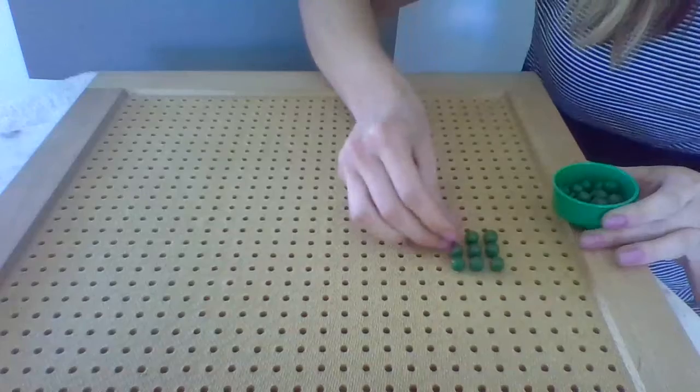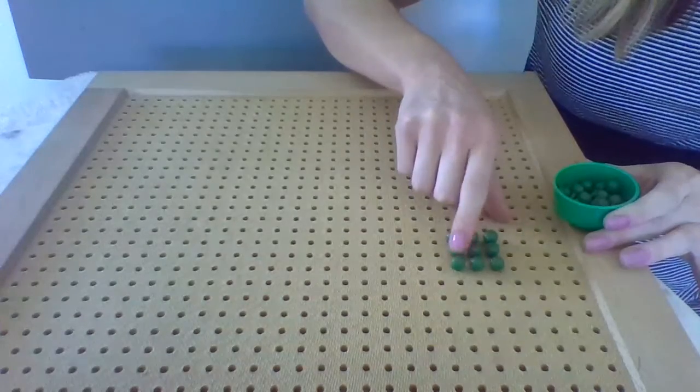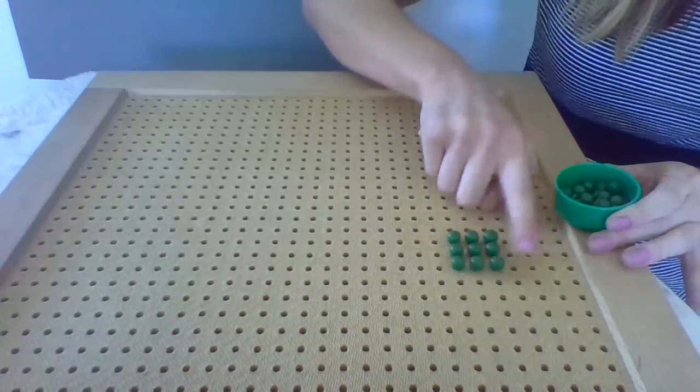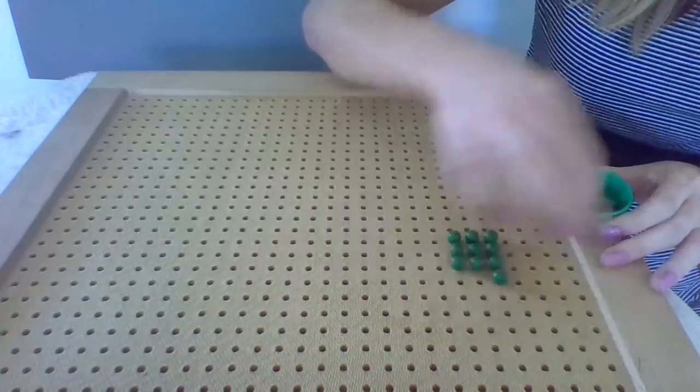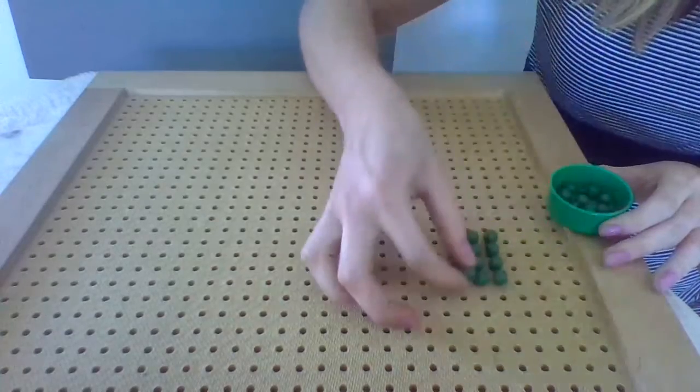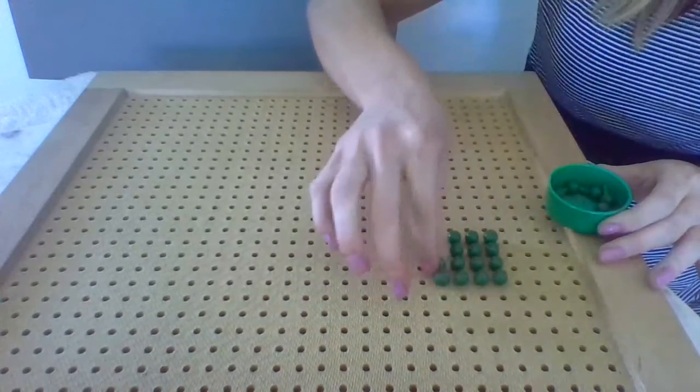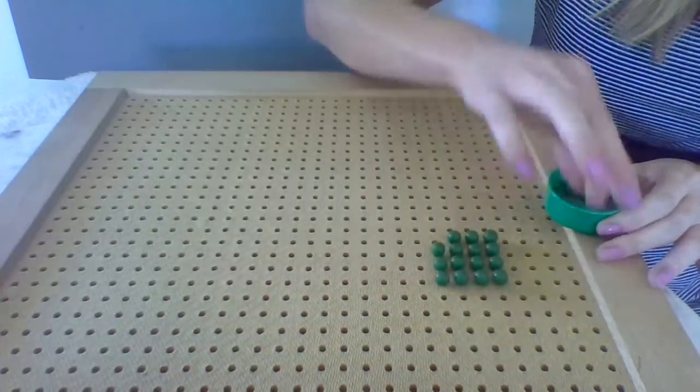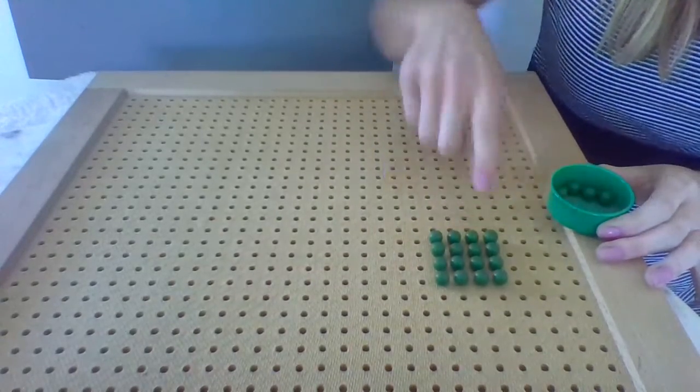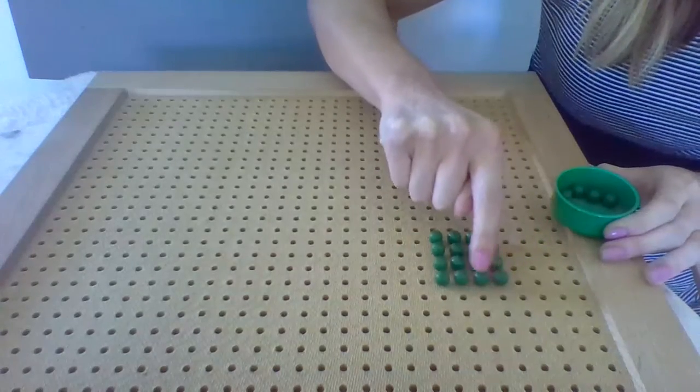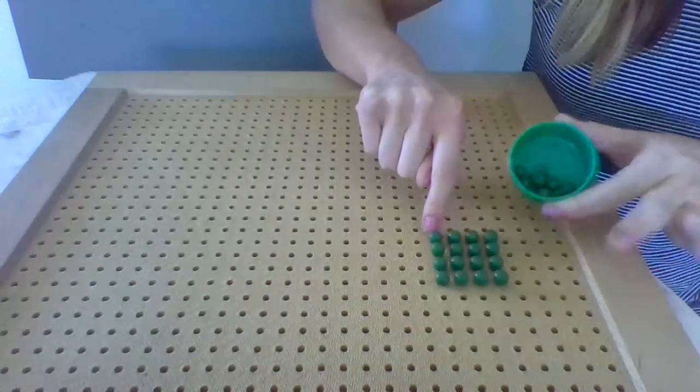Here I've built a third layer, one two three, one two three. We have this square of three, but I have more pegs. Here we have this square of four, one two three four, one two three four, but I still have more pegs.